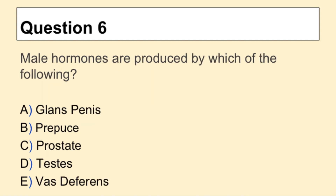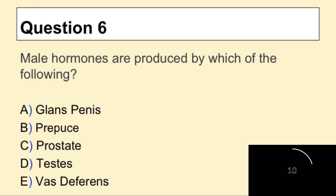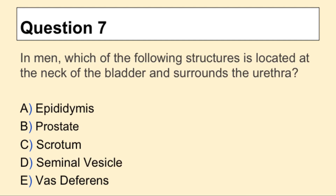Question 6: Male hormones are produced by which of the following? Question 7: In men, which of the following structures is located at the neck of the bladder and surrounds the urethra?